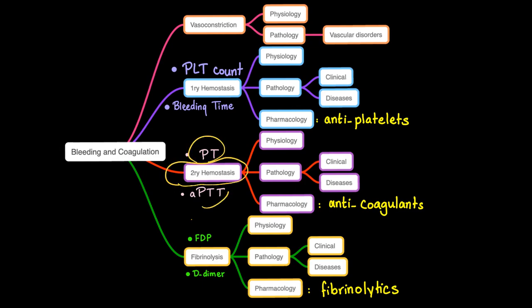So how about the PT and PTT? Both of them are normal. The reason is that Factor 13 happens after the coagulation cascade — it's the last step when everything else is said and done. PT will be normal because the extrinsic pathway is normal. PTT will be normal because the intrinsic pathway is normal. Even TT could be normal because the common pathway is normal. However, we cannot stabilize the fibrin, and it won't show up using these standard lab tests.